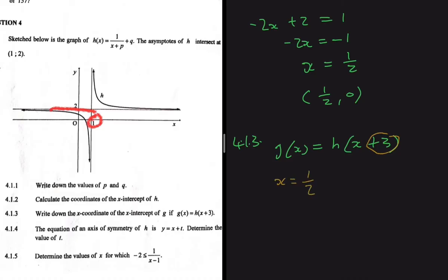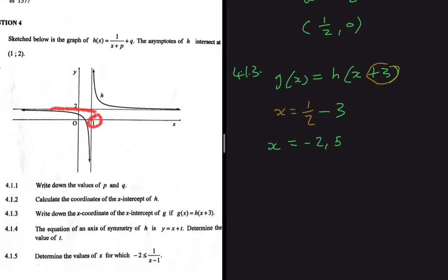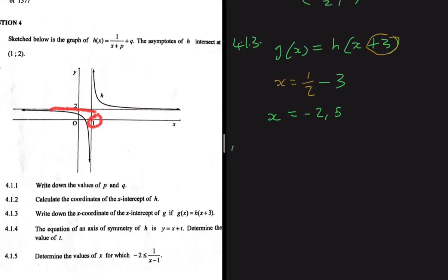So we move the x-intercept of h three units to the left. The original x-intercept was at x = 1/2, so the new x-coordinate is 1/2 - 3 = -2.5. The new x-intercept of g has x-coordinate equal to -2.5.